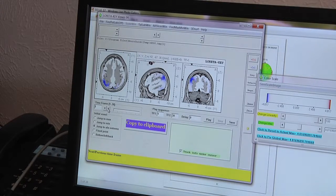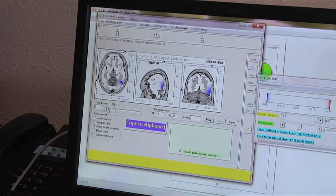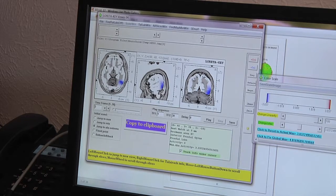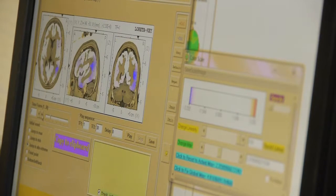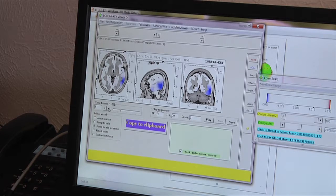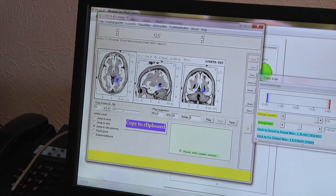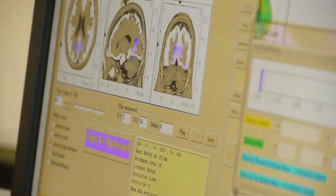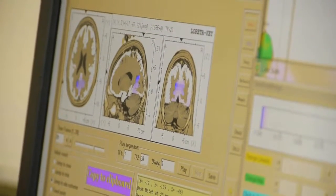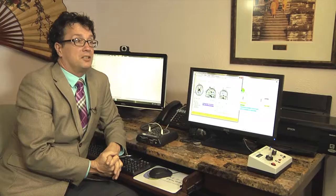We have 1, 2, 3 hertz. That is delta. 4, 5, 6, 7. We have theta. 7, 8, 9, 10, 11, 12. We're looking into the alpha range. So we can actually see different parts of the brain in different frequencies, make their changes and show why they're not communicating with other parts of the brain.